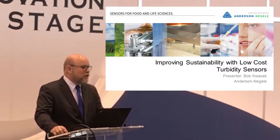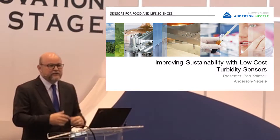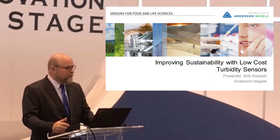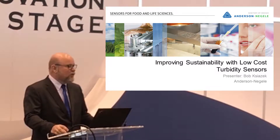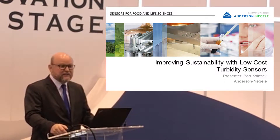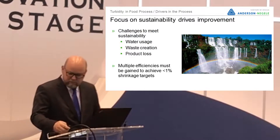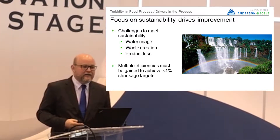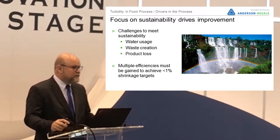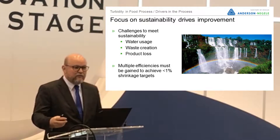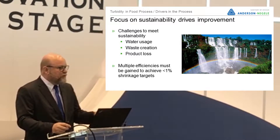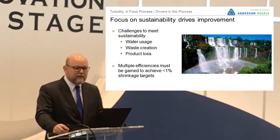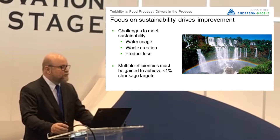Improving sustainability with low-cost turbidity sensors. What we're going to discuss is the fact that the evolution of turbidity measurement has changed to the point where there are sensors that can help us in a more complete plant process, improving sustainability. Sustainability — the goal is to use as little as we take from the environment, make the most of it, and create as little waste as possible. Within a plant, utilizing turbidity, we're going to drive towards reductions in water consumption, waste creation, and product loss.